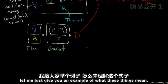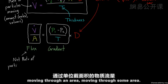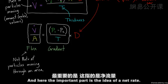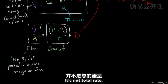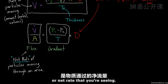Let me just give you an example of what these things mean. Let's start with flux, which is basically the net rate of particles moving through an area, moving through some area. And you can follow through the equation, and that makes sense, right? And here the important part is the idea of a net rate. So not total rate, but you're actually looking for what is the net gain or net rate that you're seeing.